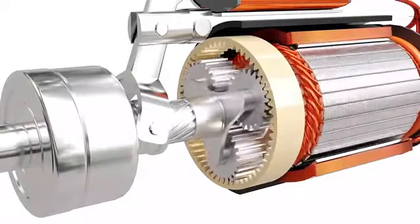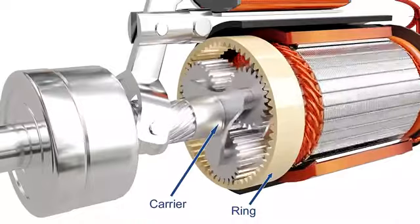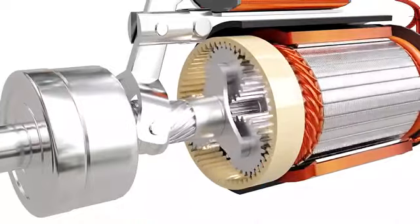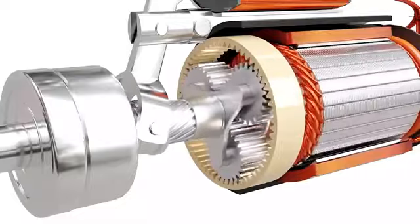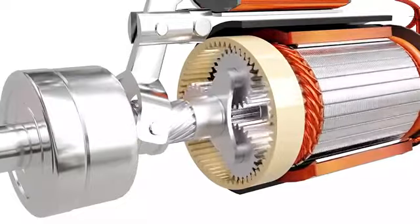It consists of a sun gear, a ring gear, a carrier, and a set of planet gears. In starters, the ring gear is fixed, the sun gear is the input, and the planet carrier is the output.